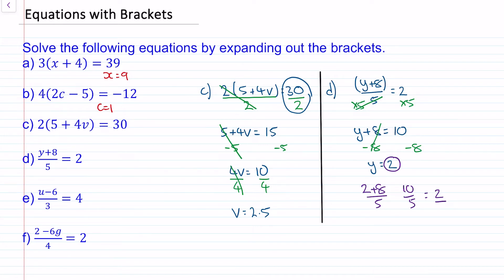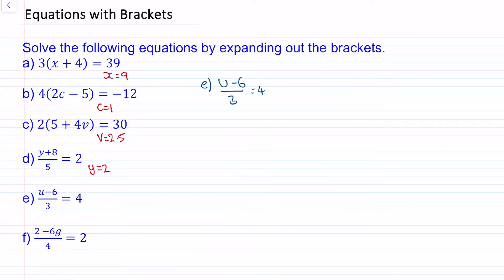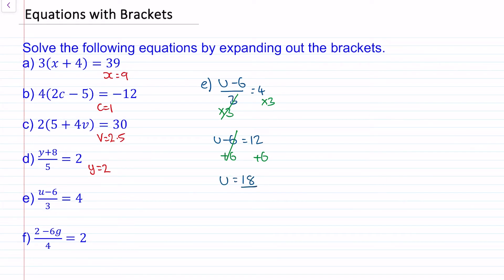Do you want to try question e? You can pause the video and resume when you're ready. Welcome back. The first thing we'll do is multiply both sides by 3 — this division and multiplication will cancel. So we have u minus 6 is equal to 12. We'll add 6 to both sides and these will cancel, so we're left with u is equal to 18. We can check this: 18 take away 6 is 12, and 12 divided by 3 does make 4. So we know that u is equal to 18.